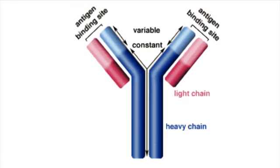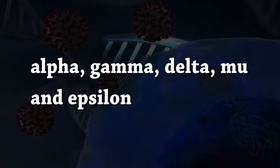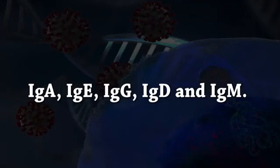Heavy chains are further classified into five types of protein chains: alpha, gamma, delta, mu, and epsilon. Correspondingly, immunoglobulins are divided into five types: IgA, IgE, IgG, IgD, and IgM.